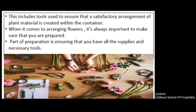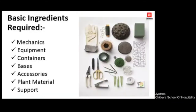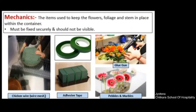You also need the container and other important tools. Just like a recipe has some important ingredients, similarly the flat arrangement has its ingredients in the form of equipment. These can be mechanics, equipment, containers, base, accessories, plant material, and support. We will be taking each one by one and discussing in detail.